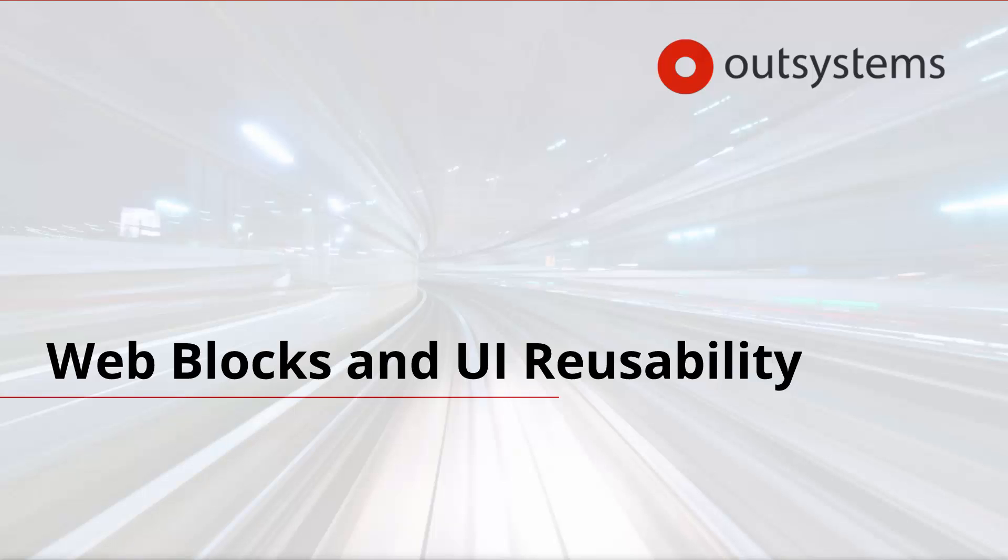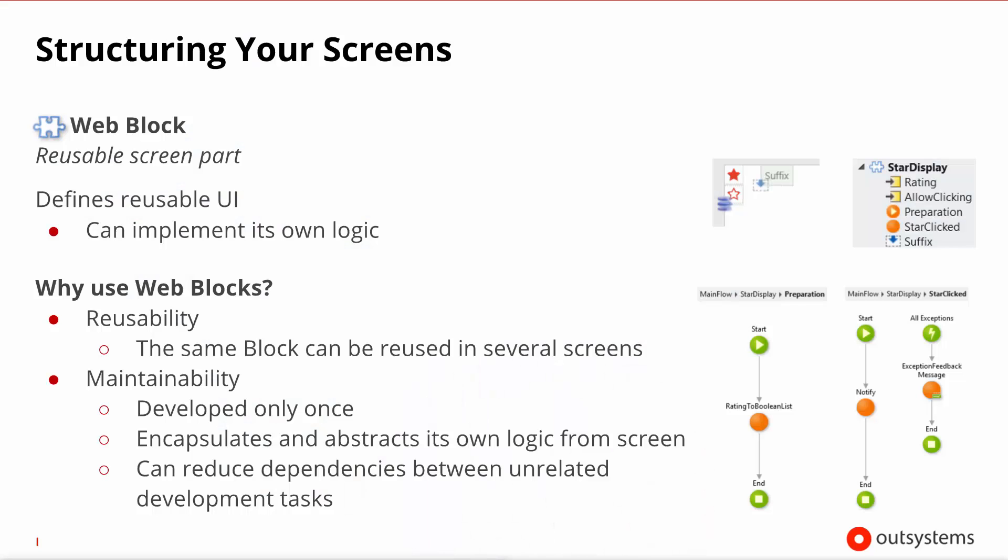When developing complex screens there are architectural and work breakdown benefits in splitting work into more manageable blocks. In OutSystems web development these are called web blocks. Web blocks allow you to implement not just the UI but also the underlying logic that moves the UI.